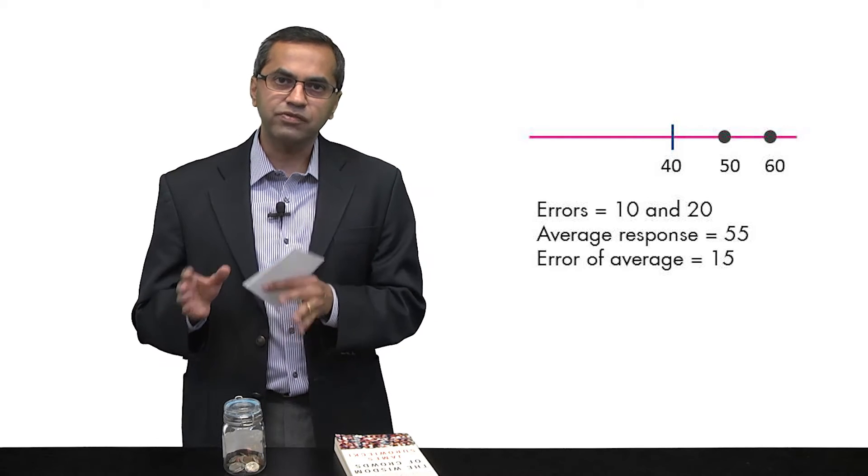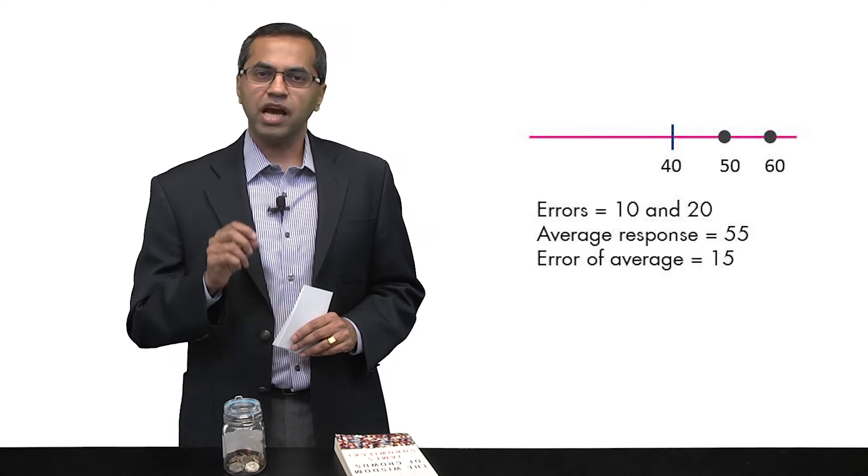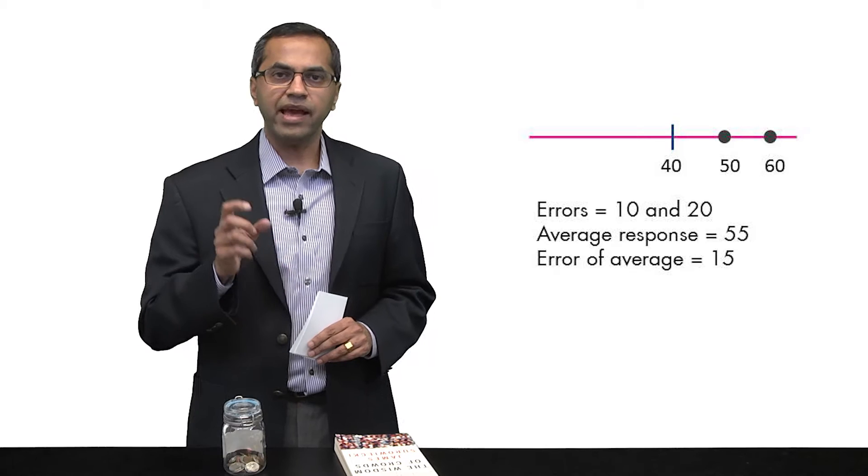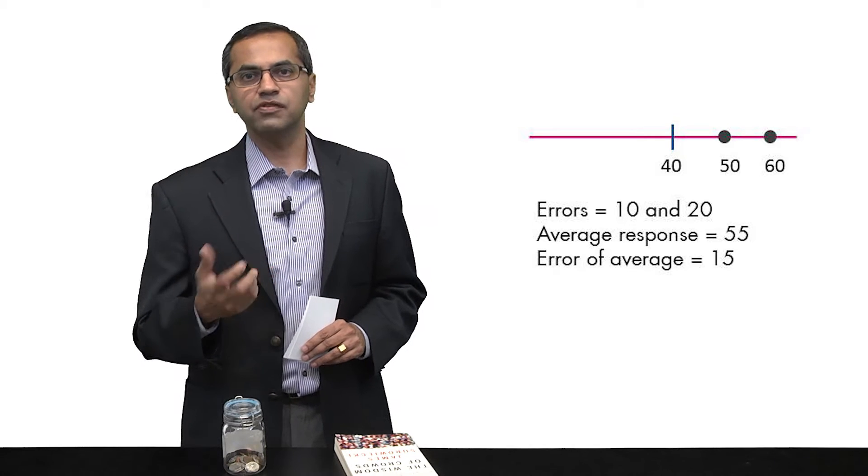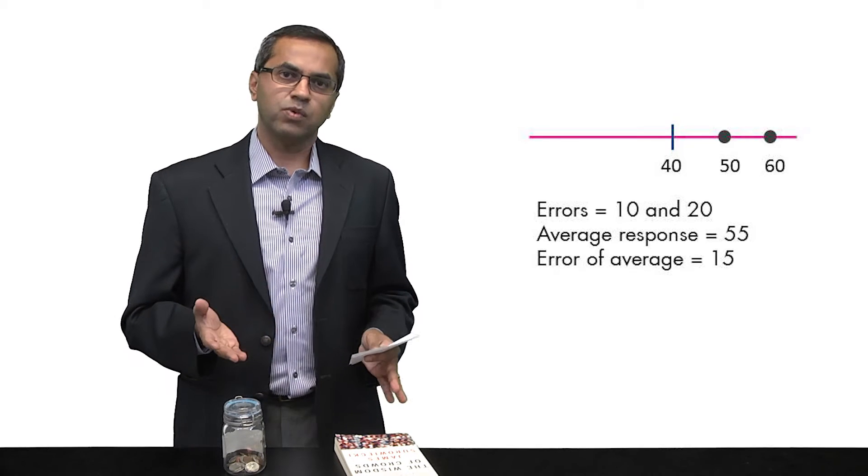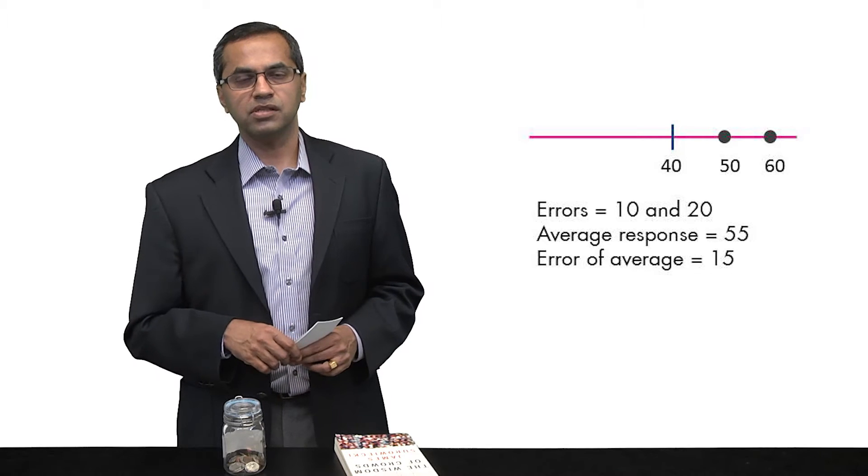But let's say you took the average of the two judges. The average would be 55. And the average error, therefore, is 15. It's better than one judge, but not as good as the other judge.